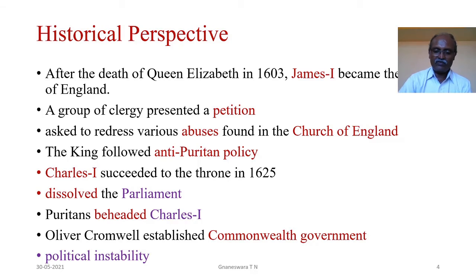Puritans beheaded Charles I and tried to establish a government something like a democracy. Meanwhile, Oliver Cromwell established a Commonwealth government. There was political instability during those turbulent years. The rule of Cromwell did not last long — he died in 1660, which paved the way for the restoration of monarchy. Thus, the Puritan Age witnessed turbulent events in the political and religious sphere, and it proved to be an age of transition.